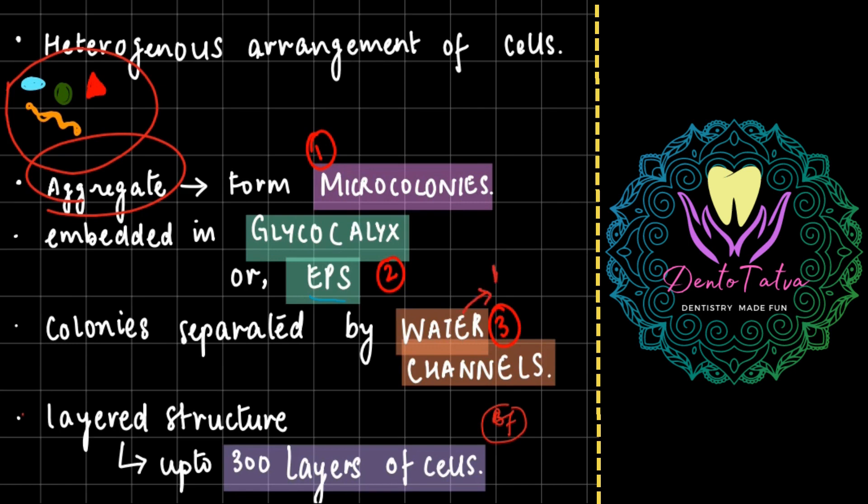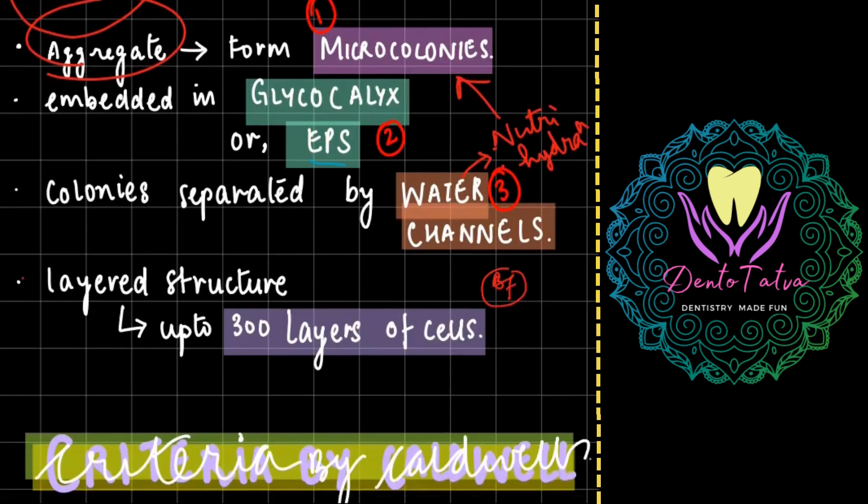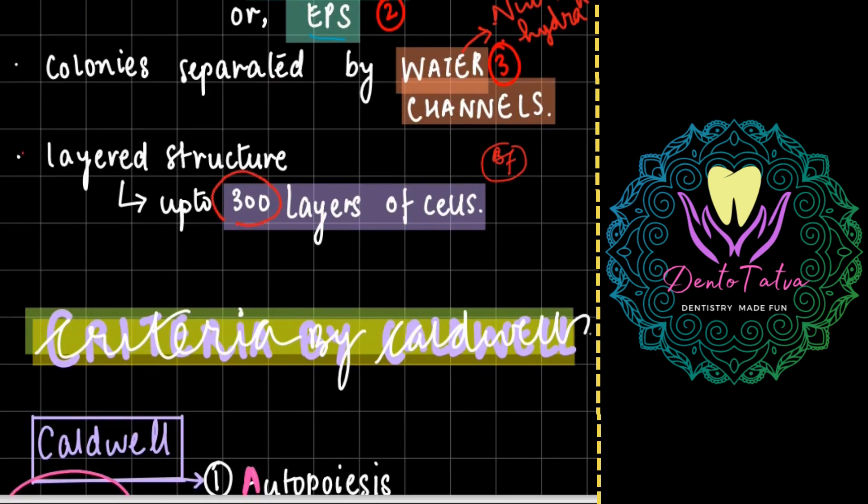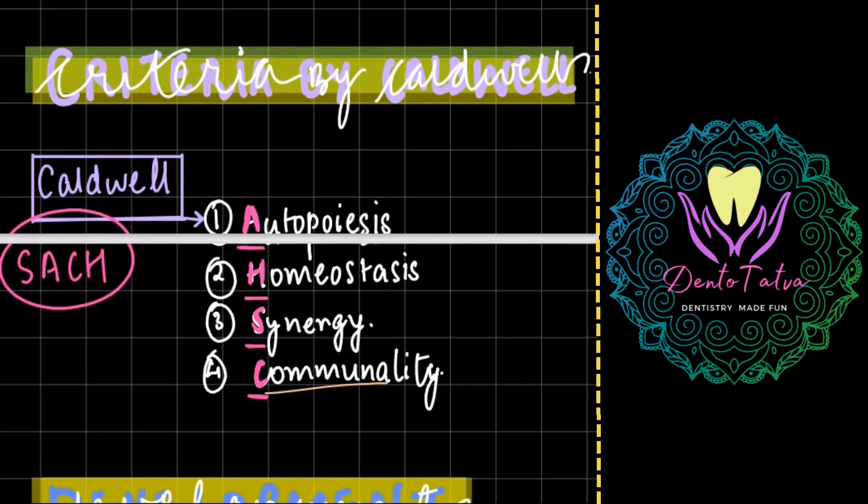These are the water channels that provide nutrition and hydration to the entire colony. This is a layered structure, up to 300 layers of cells can exist. Now the criteria by Caldwell was he said that these cells, the entire community living together, must possess the ability to self-organize, that is known as autopoiesis.